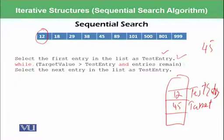So while target value is greater than test entry, so while 45 is greater than 12 and entries remain in the list, there are more entries available. Select the next entry in the list as test entry. This is the procedure we will be working.